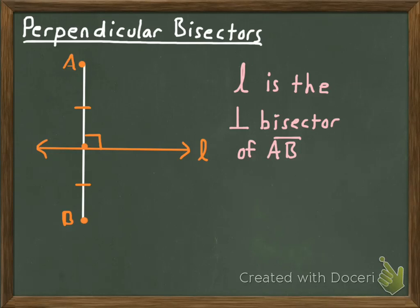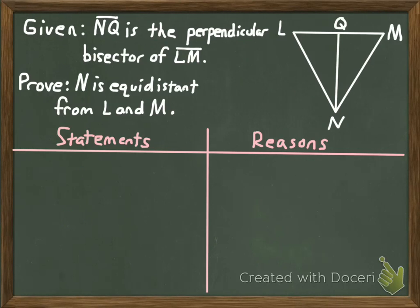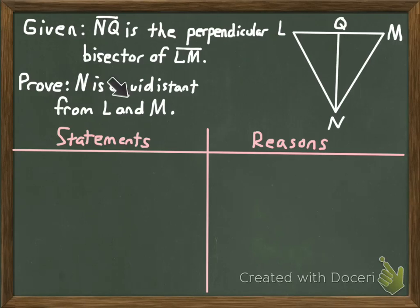Now what we're interested in is what are some properties that perpendicular bisectors have - whenever a line is a perpendicular bisector there's got to be something special about it. There are a couple of theorems we're looking at in this video. We're going to prove one right now. Here I've got a triangle where segment NQ is the perpendicular bisector of segment LM, and I want to prove that N is equidistant from L and M - meaning the distance from N to L equals the distance from N to M.